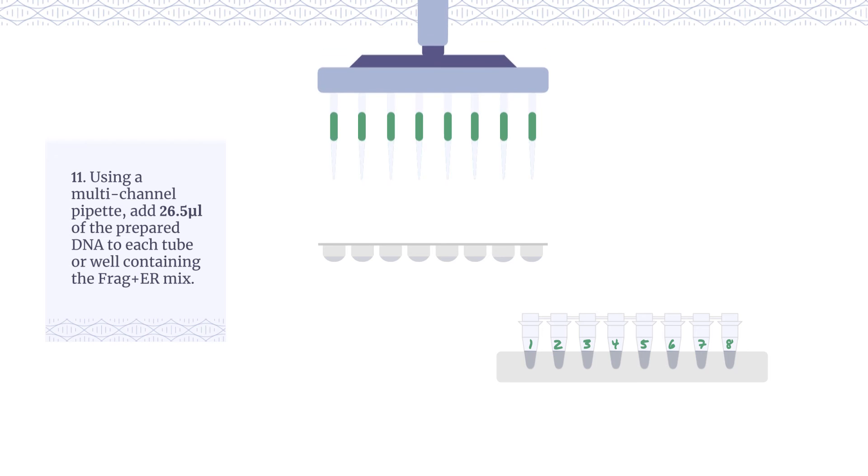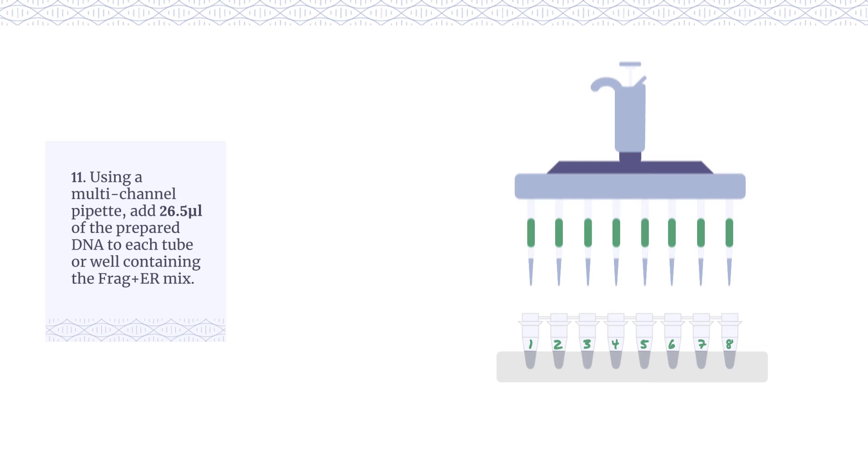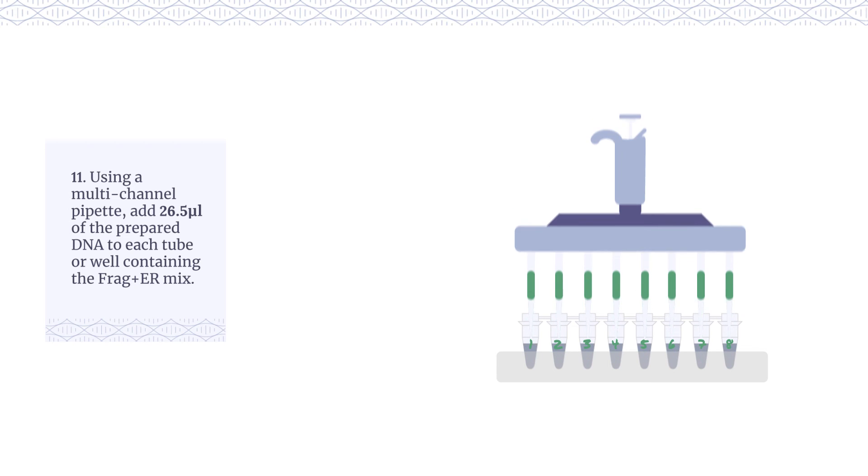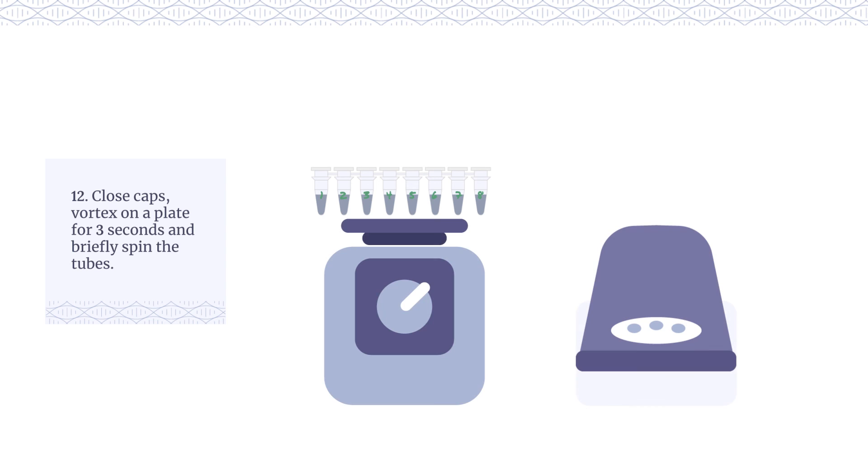Using a multi-channel pipette, add 26.5 microliters of the prepared DNA to each tube or well containing the Frag Plus ER mix. Close the caps. Vortex on a plate for 3 seconds and briefly spin the tubes.